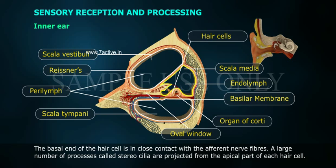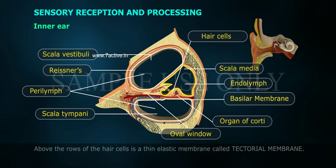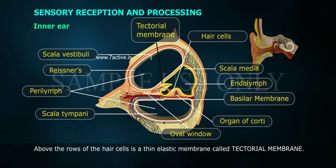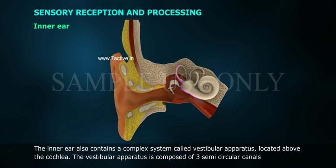A large number of processes, called stereocilia, are projected from the apical part of each hair cell. Above the rows of the hair cells is a thin elastic membrane called the tectorial membrane.